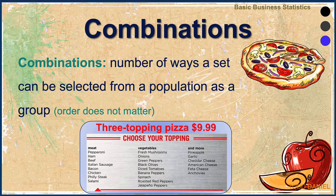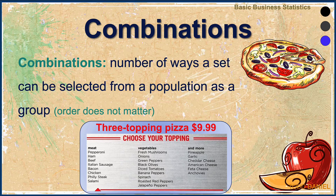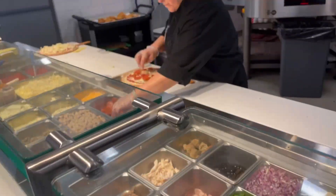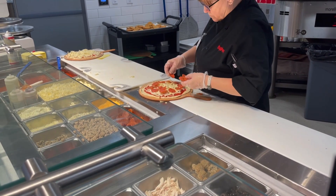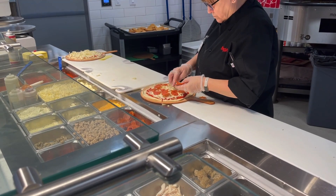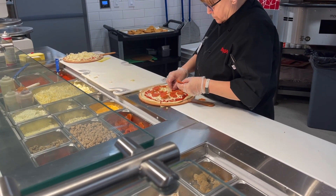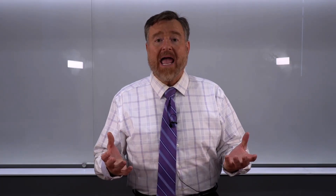Combinations are the number of ways a set can be selected from a population as a group — in other words, the order does not matter. For example, we go out to a pizza joint and you can get a three-topping pizza for only $9.99. There's a list of possible toppings including meats, vegetables, and more. You have to choose three. How many combinations of pizzas could we order? Answering that requires using a counting rule for combinations.